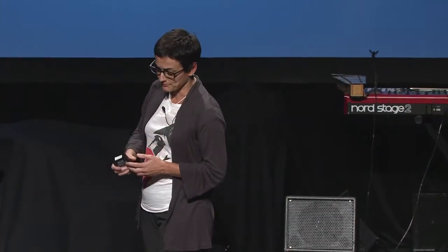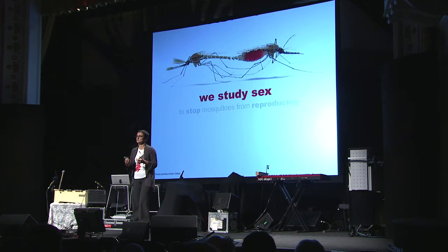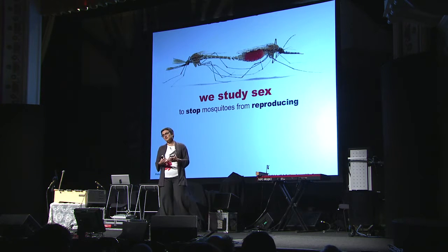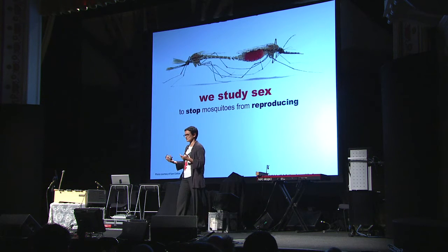So that got me thinking — there must be other ways we can do this. And then I had this revelation: what about sex? What if we targeted mosquito sex as a way to stop malaria? And that's what we do in the lab. We study sex and fertility in these mosquitoes, because if we can stop them from reproducing, then we can stop malaria transmission.